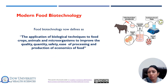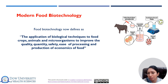Modern food biotechnology employs the tools of modern genetics to enhance beneficial traits of plants, animals, and microorganisms for food production. It involves adding or extracting selective genes to achieve desired traits. Modern food biotechnology is used to distinguish newer applications such as genetic engineering and cell fusion from more conventional methods such as breeding or fermentation.